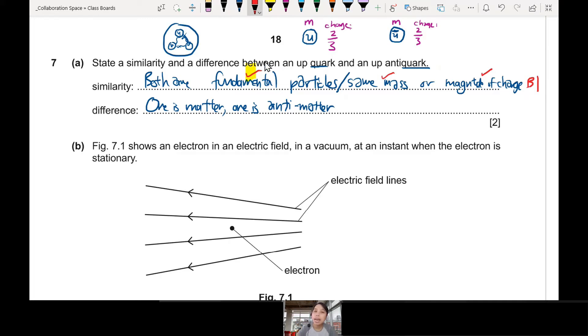The difference though, the charge. Yes. The charge. This one is actually positive 2 over 3, 2 thirds of a charge. But this one is actually negative 2 over 3. Because anti, you just reverse positive to negative, negative to positive. So you can say different sign of charge. So we can talk about metal, anti-metal, different sign of charge.